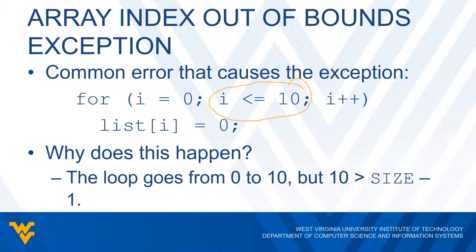So how can we fix this? There are a couple of ways. We could say i is less than 10, or we could do i less than or equal to 9. Either one of these would fix the problem. Most of the time people will just do i less than 10.